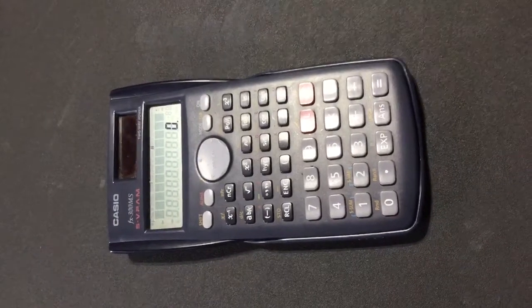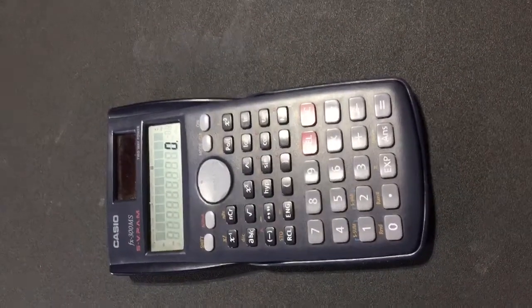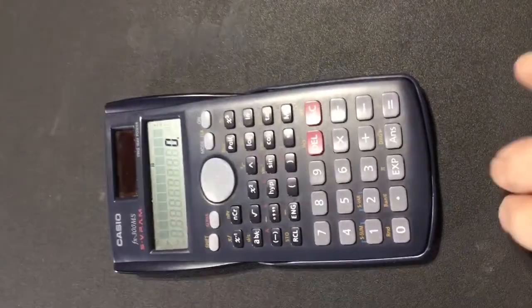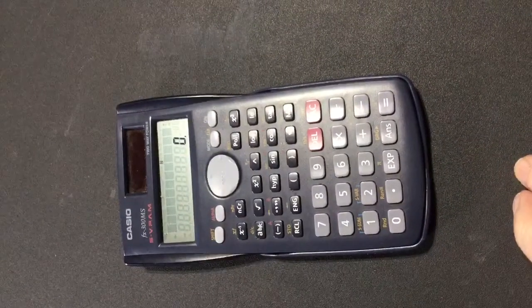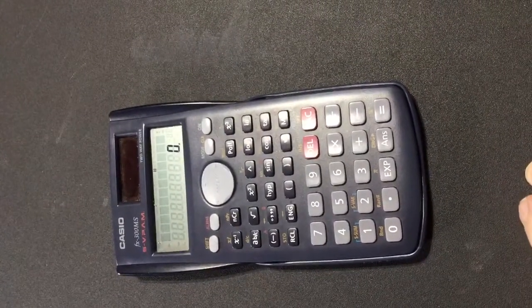Okay, let me show you how to enter the pH in a Casio calculator. All right, so what you do then is the pH is the negative log of the hydrogen ion.